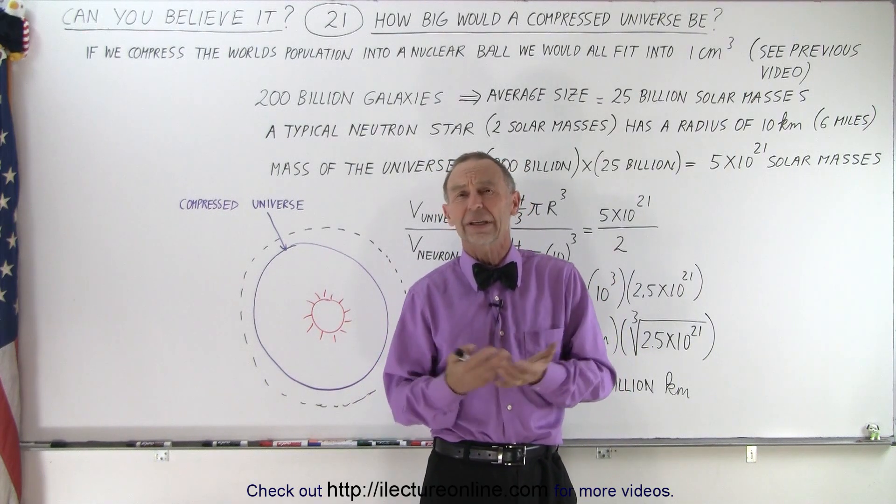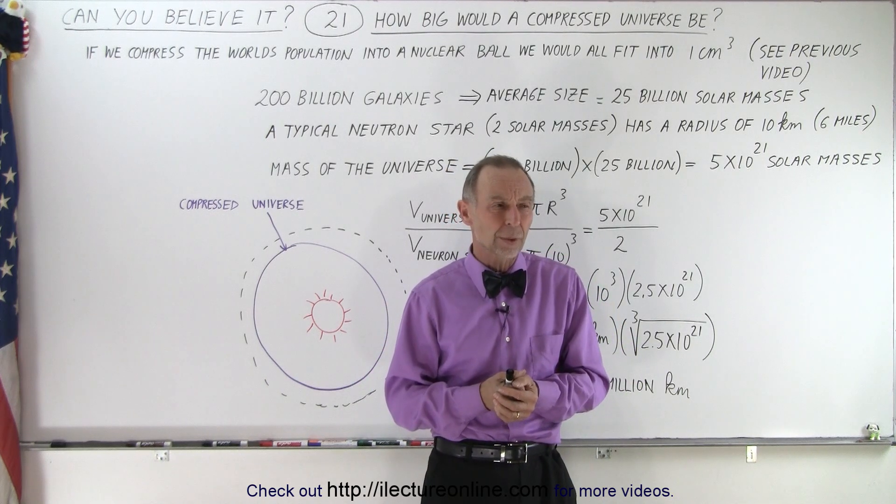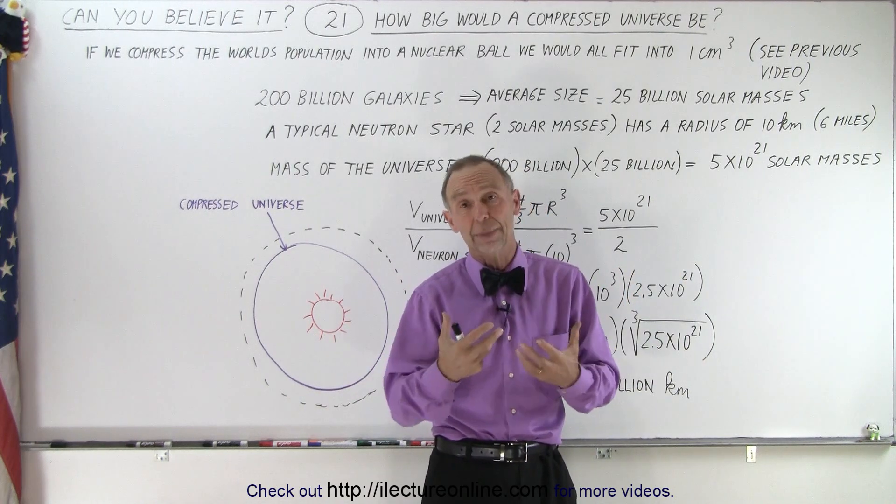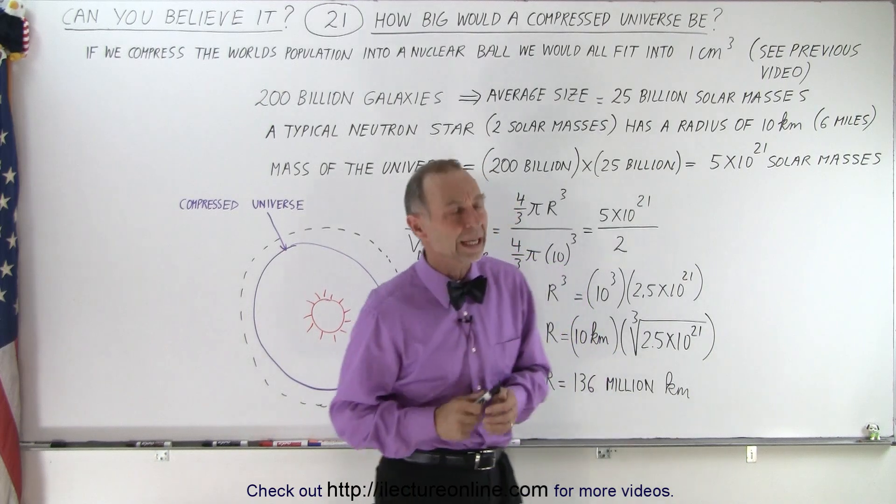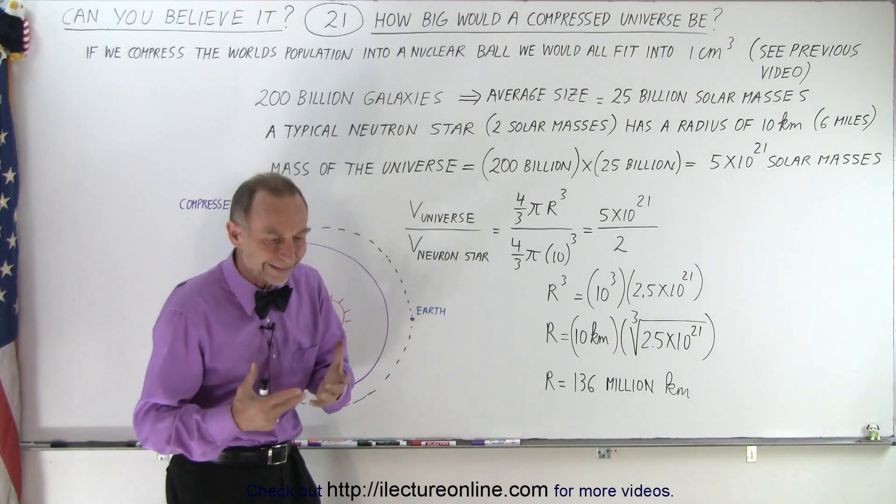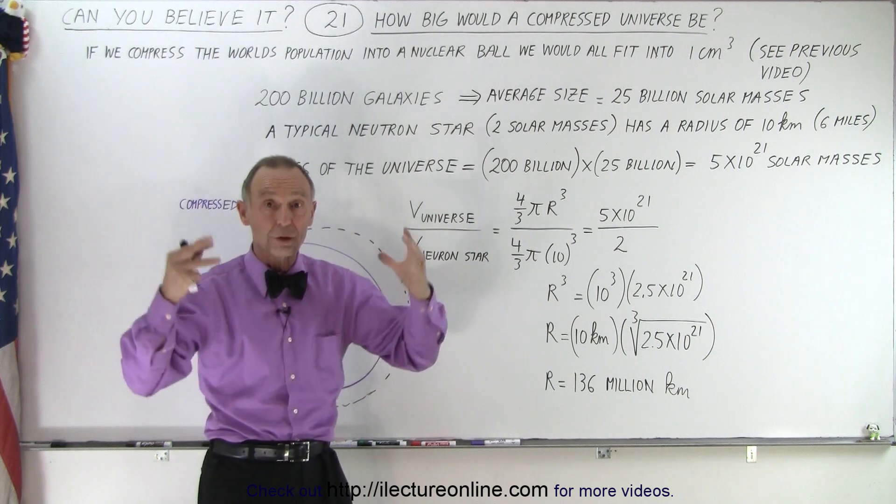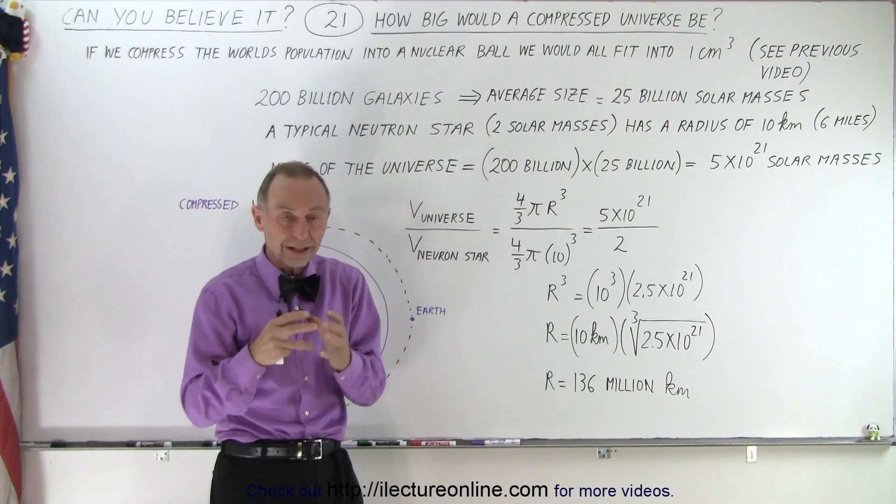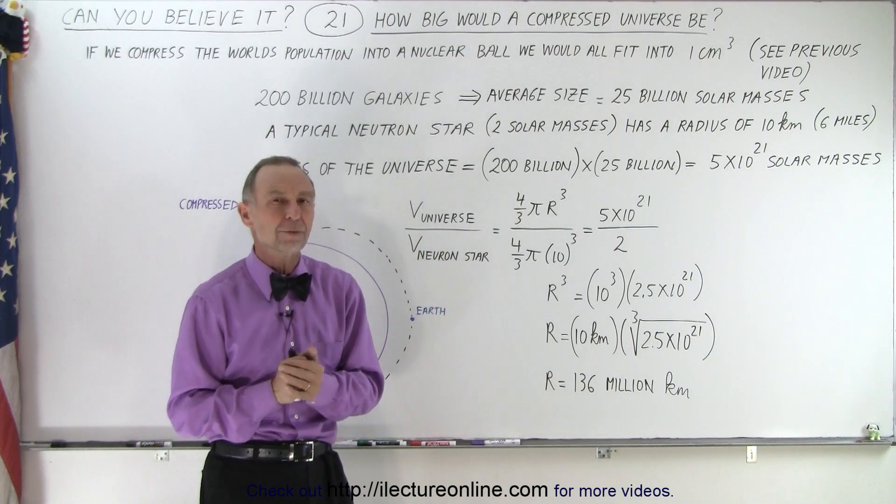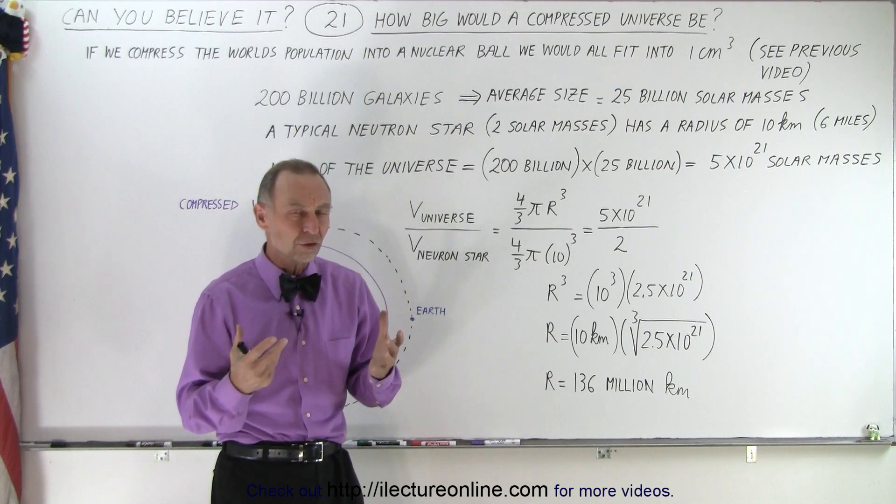Probably the average size of a galaxy is about 25 billion times the mass of the sun. We have a hint because we have neutron stars. A neutron star is the end result of a giant star that collapses in on itself such that the gravitational force compresses it into a nuclear ball—basically a huge nucleus pushed together with no longer any space between the nuclei.